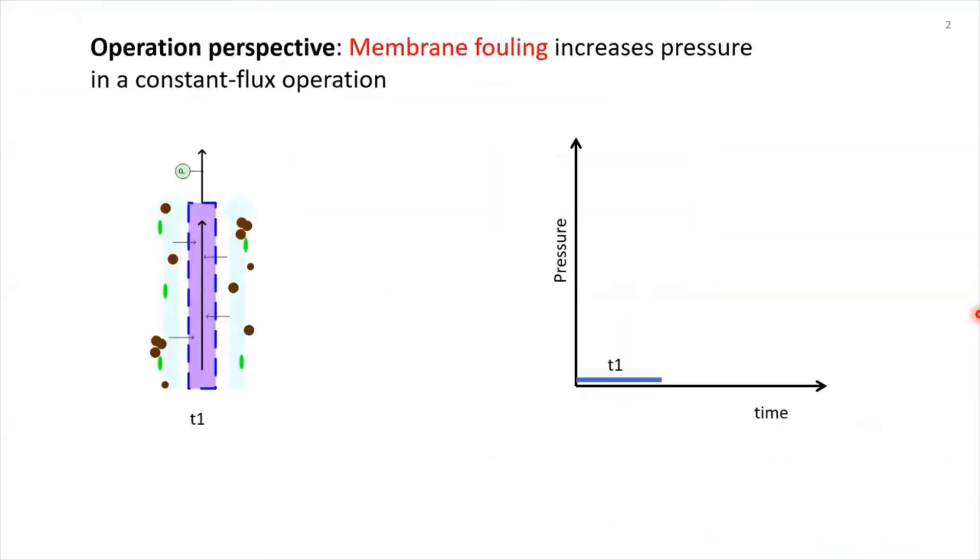So to give an introduction, let's see from the operational perspective. Normally membrane process, this is for liquid filtration, is operated at a constant flux system. What happens is that as time passes by, you start to develop the fouling layer on the membrane surface, as you can see here. As you continue the filtration, it will reach what we call a threshold flux.